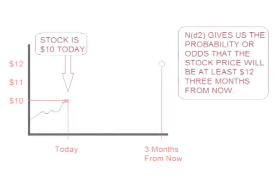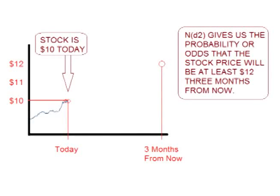For example, let's say a stock is currently $10 today and we buy a $12 call option that expires in three months. ND2 tells us, using simple probability, whether the strike price will be at or above $12 when the option expires — in other words, the probability or odds of whether or not the option will be exercised.